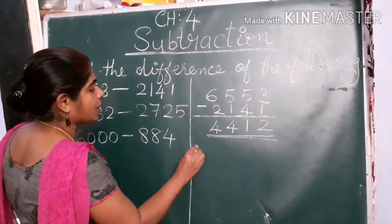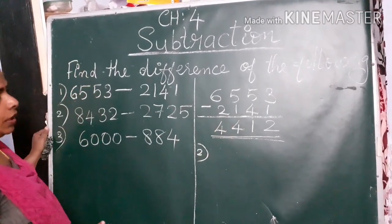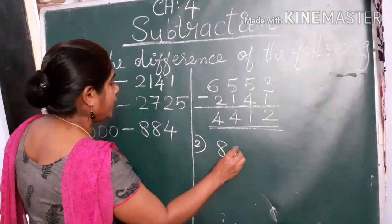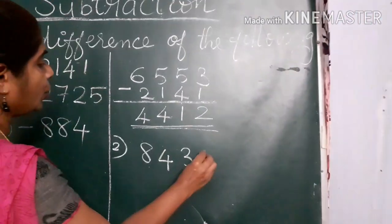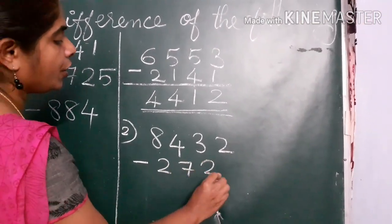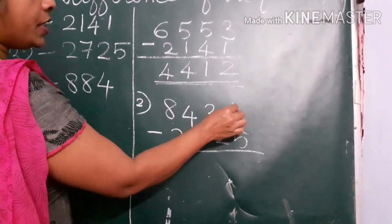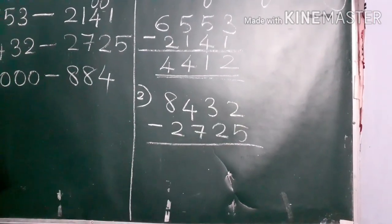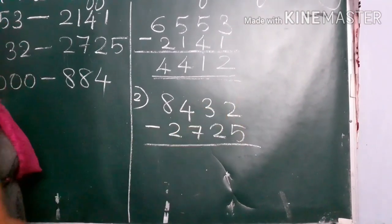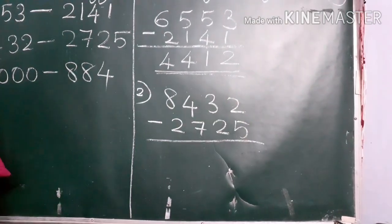Let us go to the next question: 8,432 minus 2,725. I told you the first number should be greater than the second number. Here in the ones place, we have to subtract 5 from 2. We can't subtract a bigger number from a smaller number.